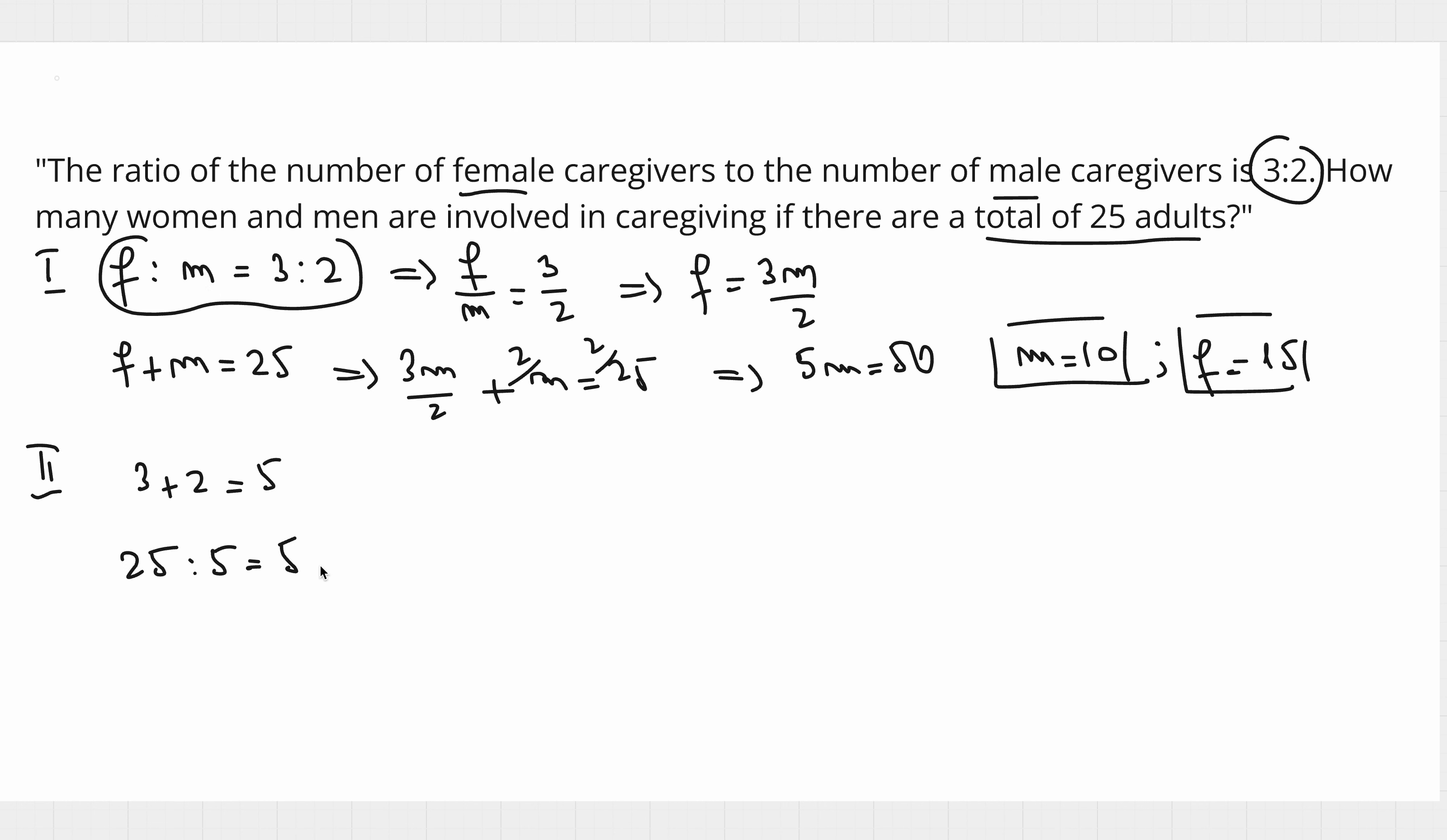That means the number of females is 5 times the number of females per group, which is 15, and the number of males is 5 times the number of males per group, which is 10.